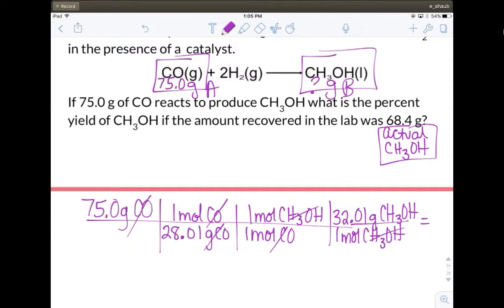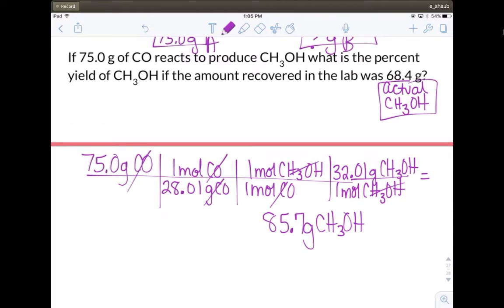So if I just take my 75 times my 32.01 divided by 28.01, I get a total mass of methanol to be 85.70 grams CH3OH. Now that is what I calculated. So this is what we call the theoretical yield. If we were to do this reaction, everything was perfect, we should produce 85.7.